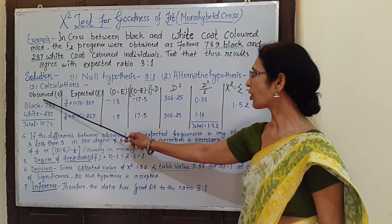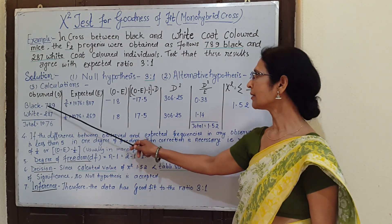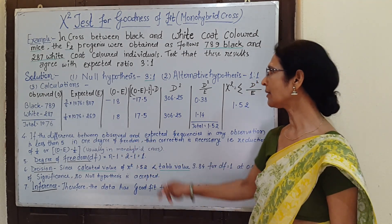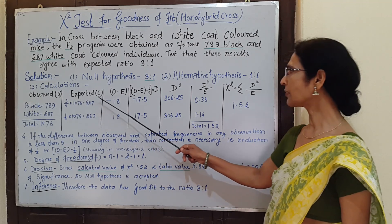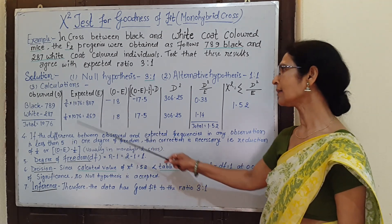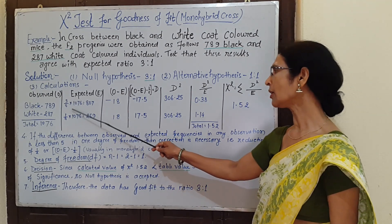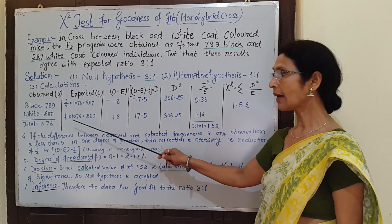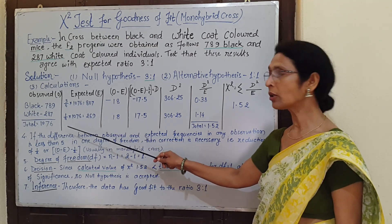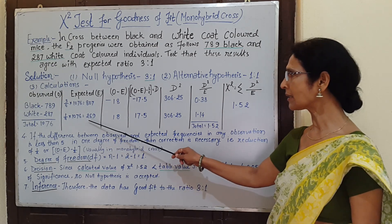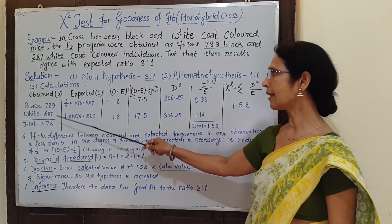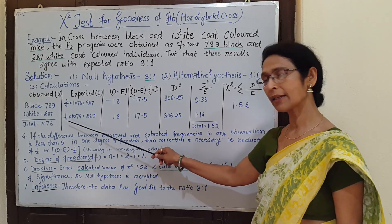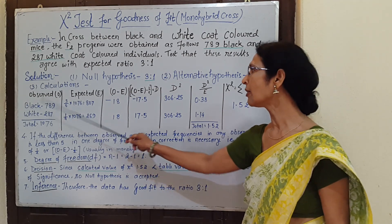Let's see the table for observed frequency: black 789, white 287. Expected frequency is calculated like this: 3 divided by 4 multiplied with 1076, and 1 divided by 4 multiplied with 1076. Here 3 is the ratio of dominant trait black, and 1 is the ratio of recessive trait white.